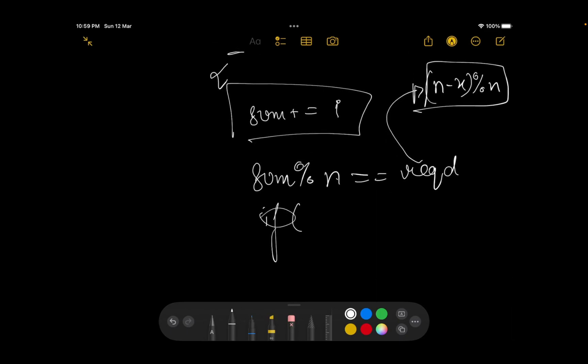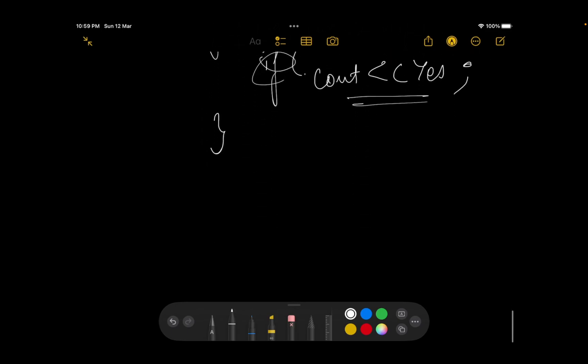If this happens, print yes, keep continuing. At the end if you don't find any valid value, just print no. So that was the entire solution.